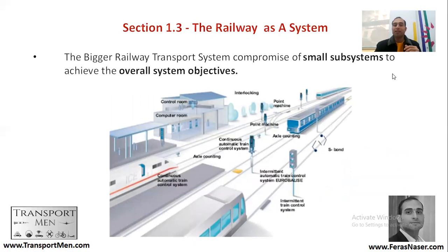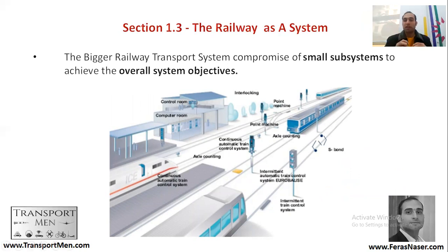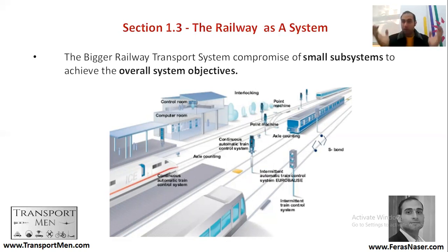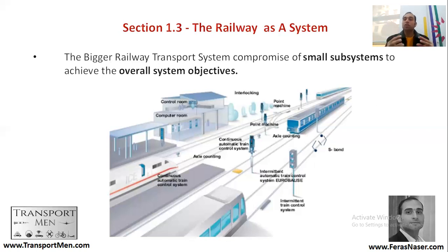The bigger railway transport system comprises smaller subsystems that achieve the overall system's objective. The railway itself is a system consisting of subsystems: the trains are a subsystem, the track infrastructure is a subsystem, electrification is a subsystem, and the signaling system is a subsystem. The trains themselves have their own subsystems — motors, suspension systems, bogies, wheels, and pantographs — all working together to achieve the overall objective.